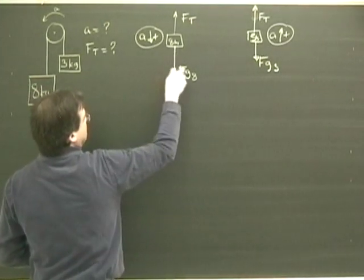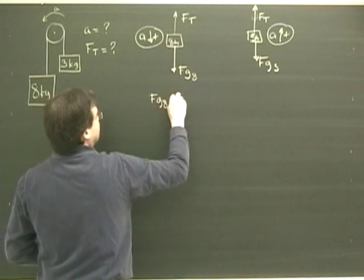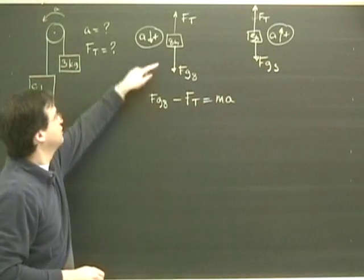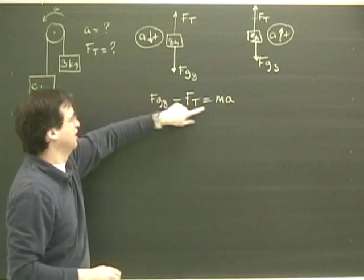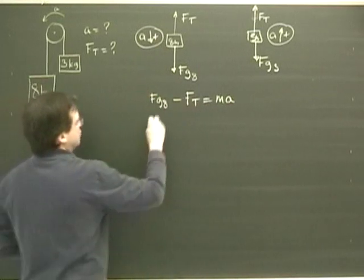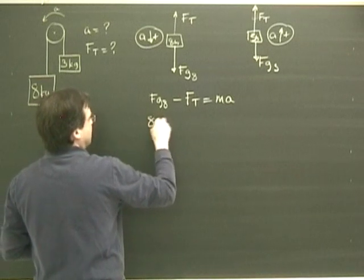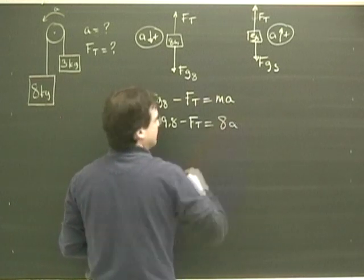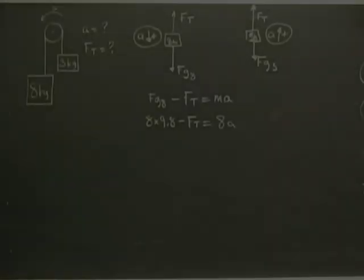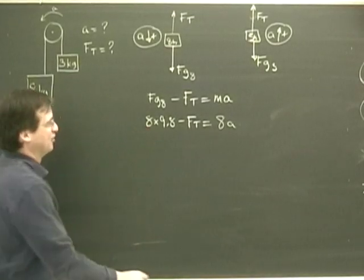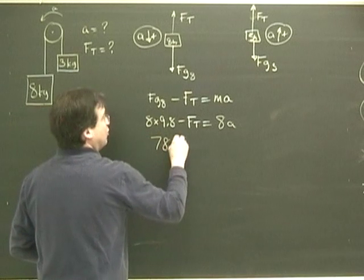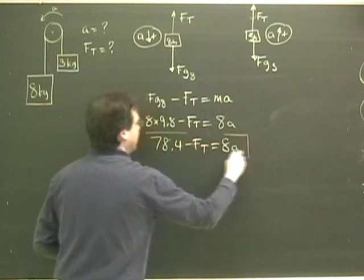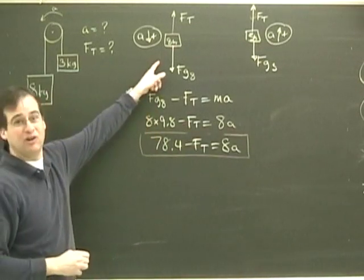Well, in this one, it's going to be positive Fg on the eighth minus the force of tension equals Ma. In the direction of acceleration, this is positive and this is negative. Positive the force of tension, which is 8 times 9.8 minus the tension equals, and I can plug a number in there, 8a. So 8 times 9.8. I had to do a quick calculation here. So we got 78.4 minus Ft equals 8a. So this is the equation that governs the motion of this box.